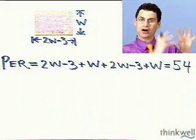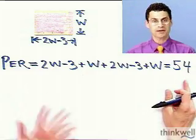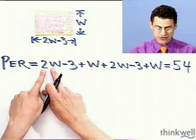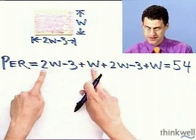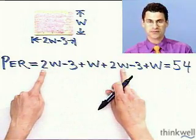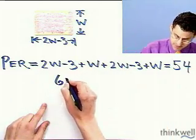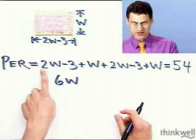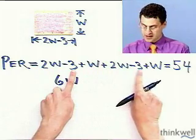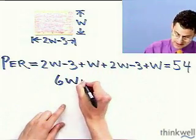Notice how I took all those words and converted them through the use of a picture and introducing some unknowns into a math fact. This looks complicated but it's not because everything combines quite nicely. I have 2w plus w is 3w, plus another 2w is 5w, and one more w gives me 6w. Then a minus 3 and another minus 3 is minus 6.